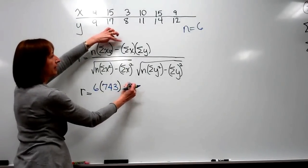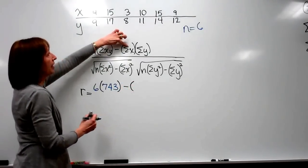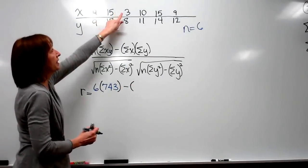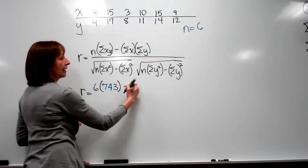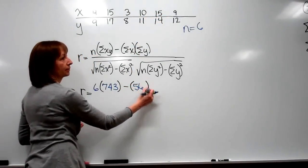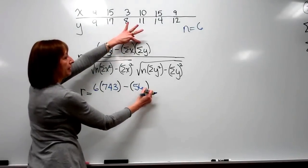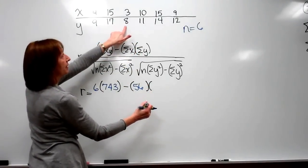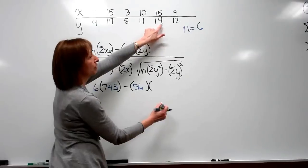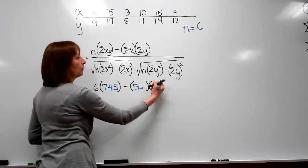Then minus, if I add up all the x's, if I take 4 plus 15 plus 3 plus 10 plus 15 plus 9, adding up all the x's I get 56. And then times, add up all the y's, 9 plus 17 plus 8 plus 11 plus 14 plus 12, that gives me 71.